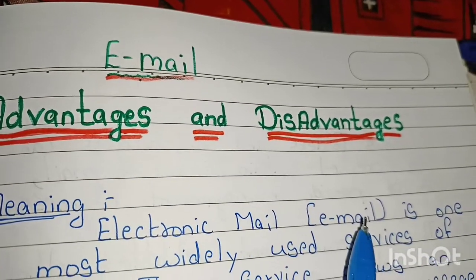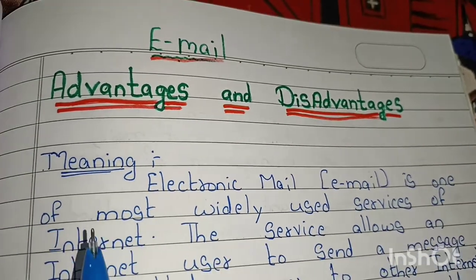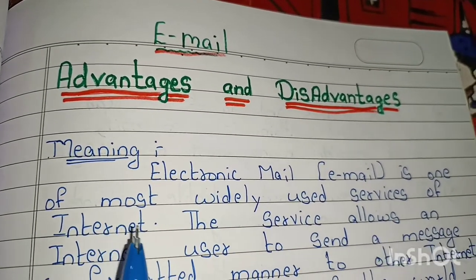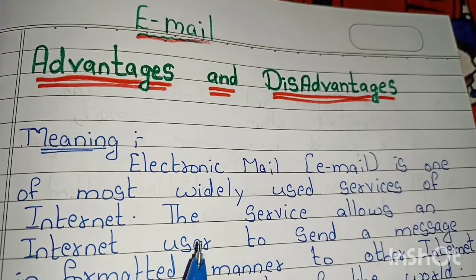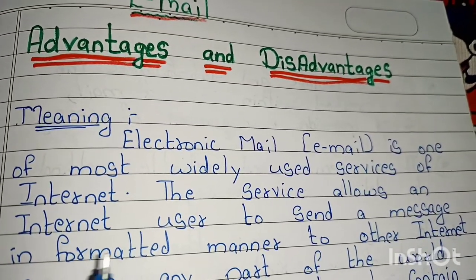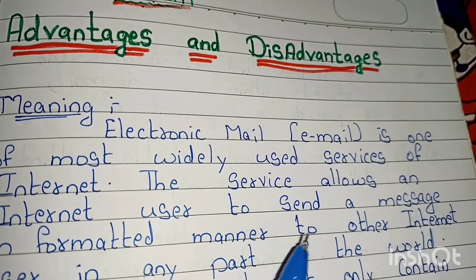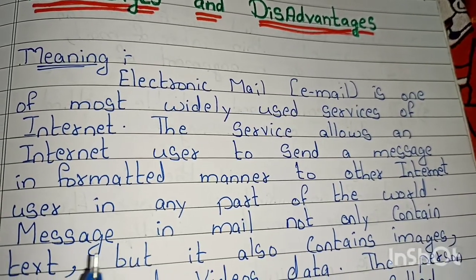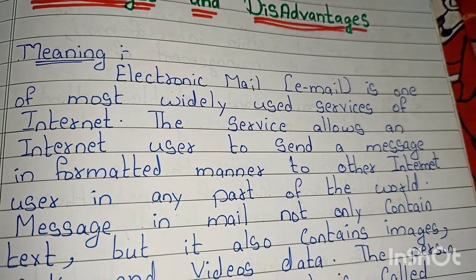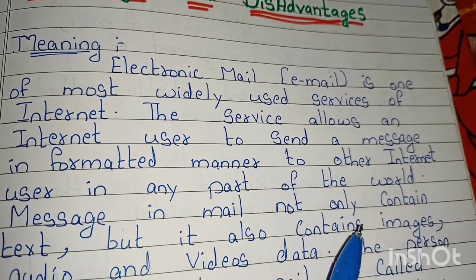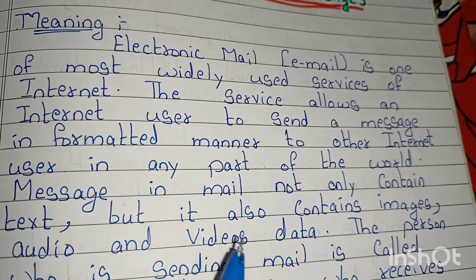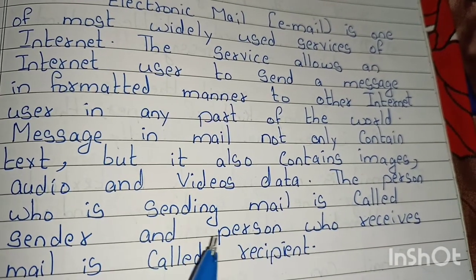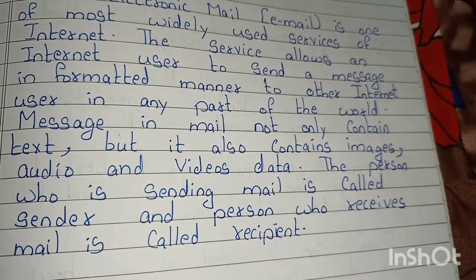Electronic mail, means email, is one of the most widely used services of the internet. The service allows an internet user to send a message in a formatted manner to other internet users in any part of the world. Messages in mail not only contain text but also images, audio, and video data. The person sending the mail is called the sender and the person who receives the mail is called the recipient.